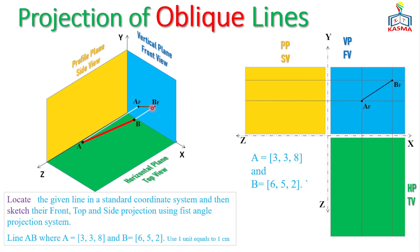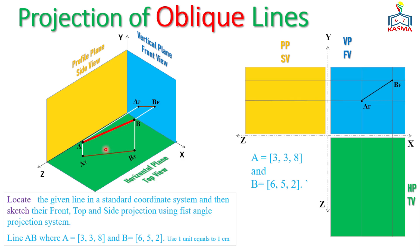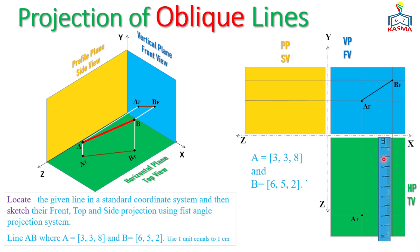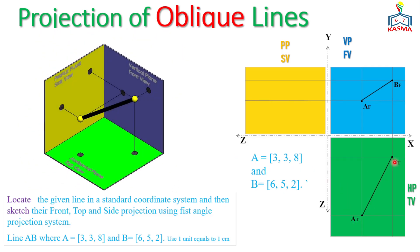For the top view, we extend vertical construction lines from the front view. Point A has X=3 cm and Z=8 cm — we mark that as A-top. For Point B, X is 6 cm and Z is 2 cm — we mark that as B-top. Connecting A-top and B-top gives the top view projection of line AB.